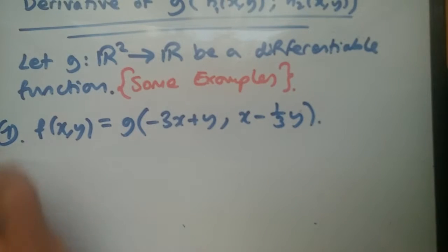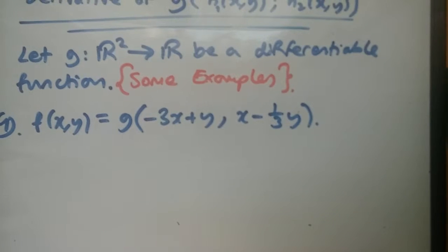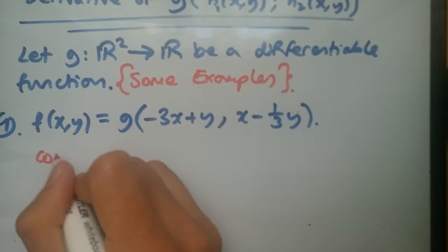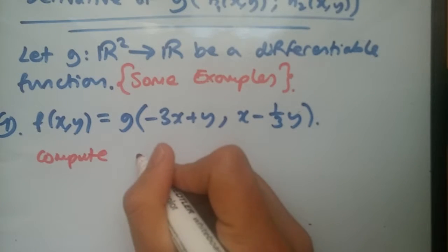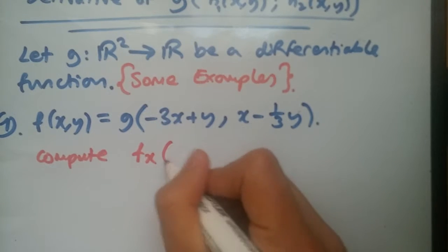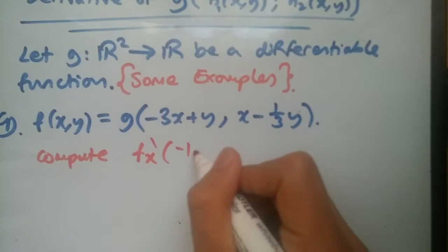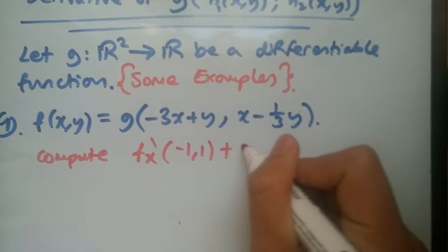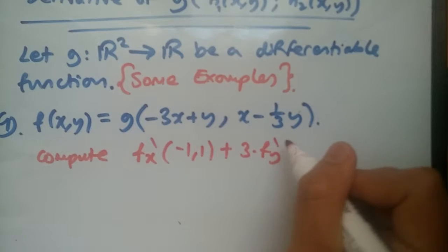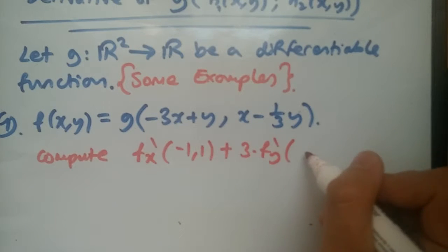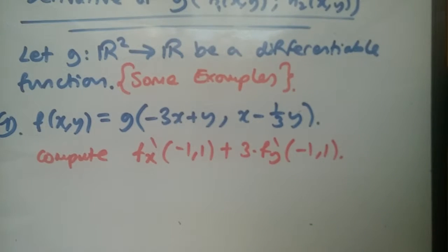The question is how do we differentiate this. First things first, we use a method, and I want us to compute f prime x at the point (-1,1) plus 3 times fy prime at the point (-1,1) and see what we get.